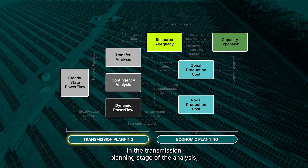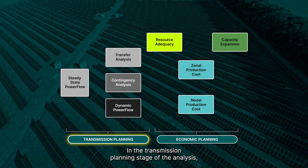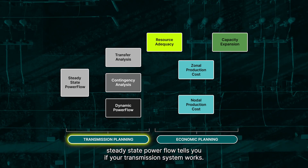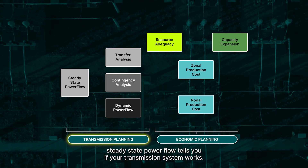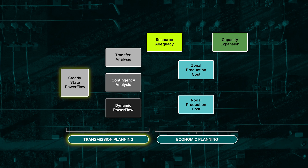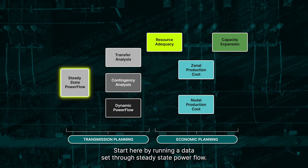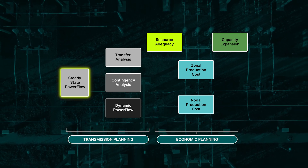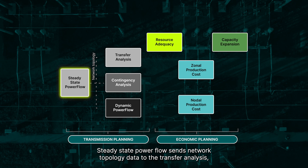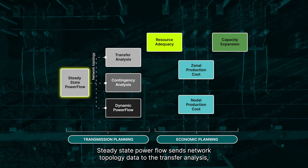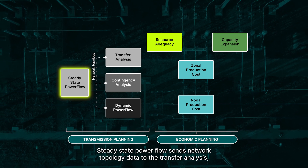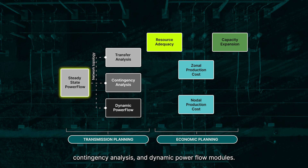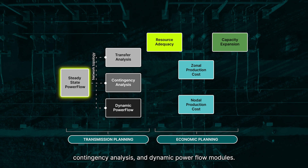In the transmission planning stage of the analysis, Steady-State Power Flow tells you if your transmission system works. Start here by running a dataset through Steady-State Power Flow. Steady-State Power Flow sends network topology data to the Transfer Analysis, Contingency Analysis, and Dynamic Power Flow modules.